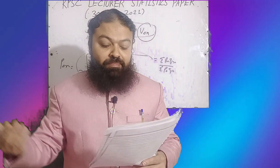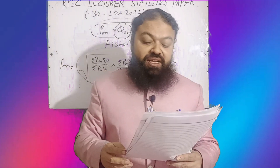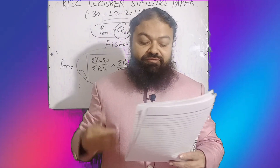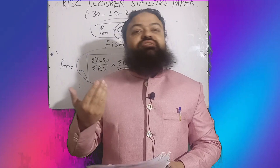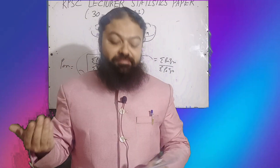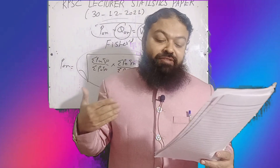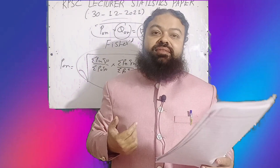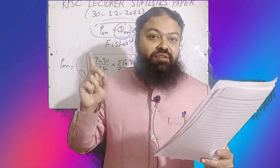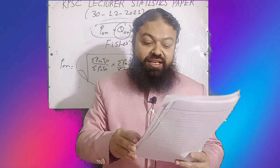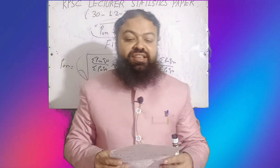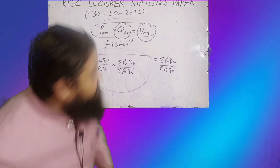A very important question from the KPSC Lecturer Statistics paper: if a coin is tossed 50 times, what is the probability of a head? It is 1/2, or 0.5 — there are 50% chances of a head. If the question asks for the expected number of heads, the answer is 25. However, that was not given in the exam, so the correct answer was 'none of these.'